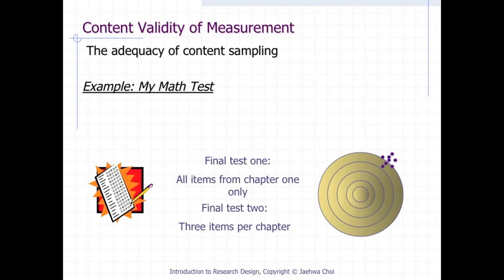Content validity of measurement implies the adequacy of content sampling. For example, in a math test: if a teacher writes a final exam with all items from chapter one only, versus writing another exam with three items per chapter, the second test has better content validity because it more adequately samples the full content.